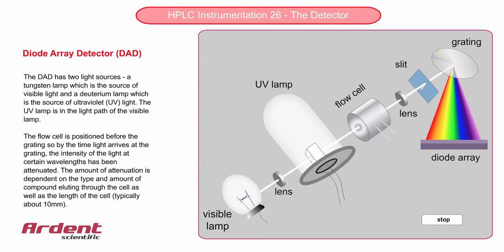The transmitted wavelengths fall on an array of diodes, and each diode will receive a certain wavelength band of light. The total peak response is the total response from the light which is hitting all the diodes.